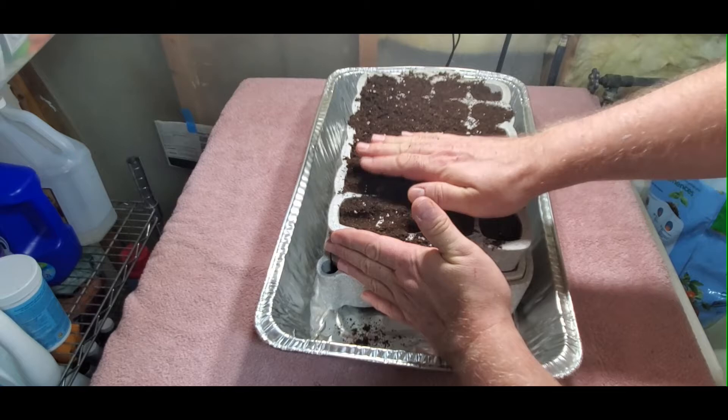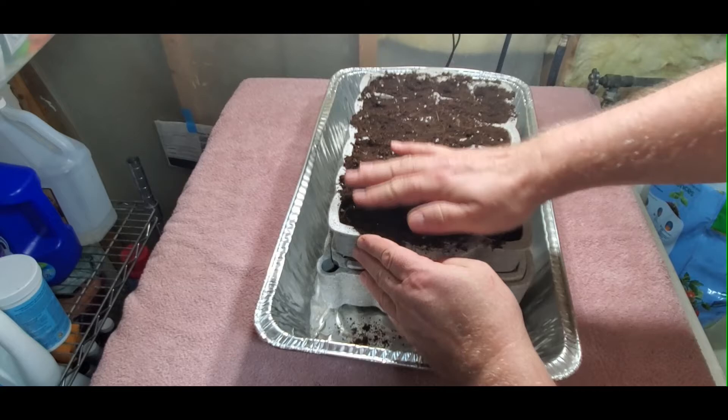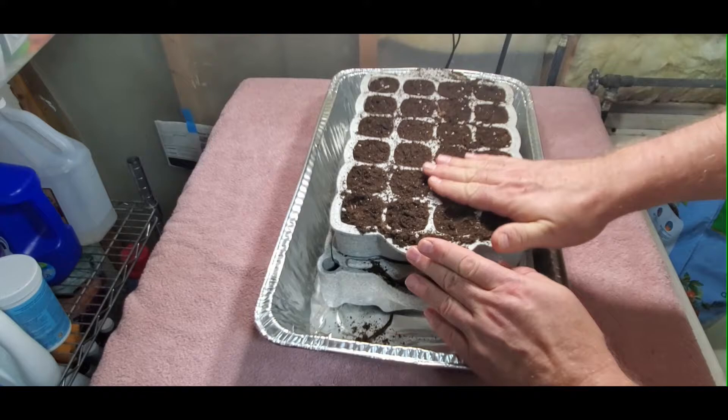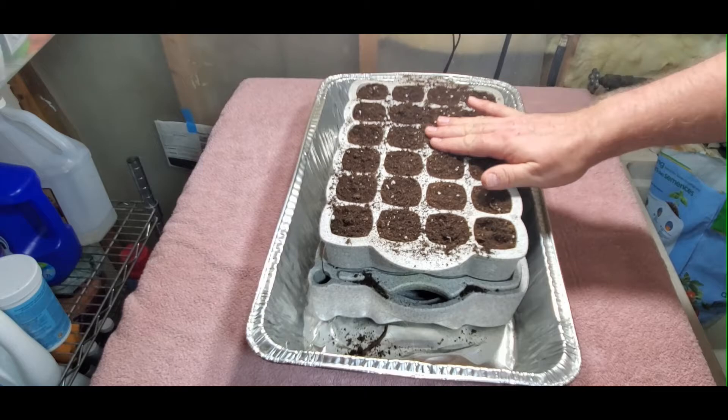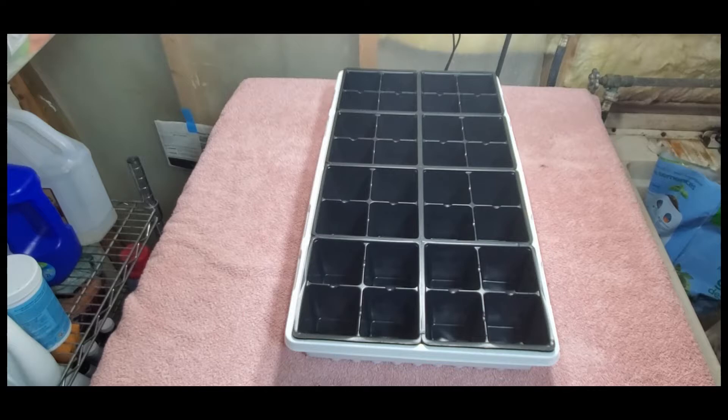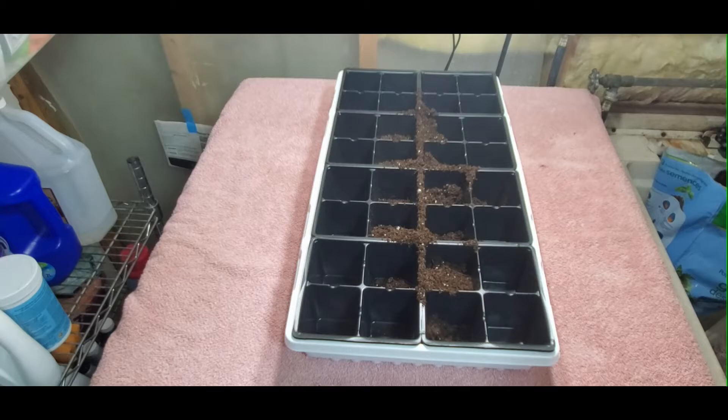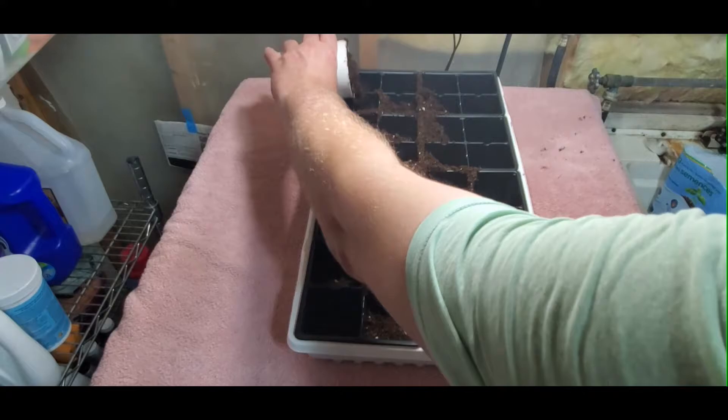You want those seeds to be able to penetrate the soil and have a good root system to start off with. I have here a big roasting tray or pan just to catch all the dirt because it gets a little bit messy, but that's why I have a towel as well. I would recommend either putting some newspaper down or have a tray or something to catch some of the dirt and water.